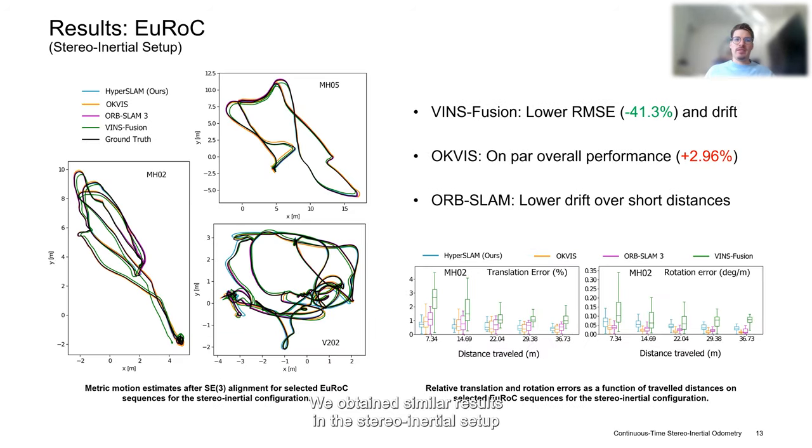We obtained similar results in the stereo-inertial setup on the EuRoC dataset, where we also compared against OKVIS. On EuRoC, our approach consistently outperforms VINS-Fusion and performs on-par with OKVIS in terms of overall RMSE as well as in terms of drift. Compared to ORB-SLAM, we achieve lower drift over short distances.